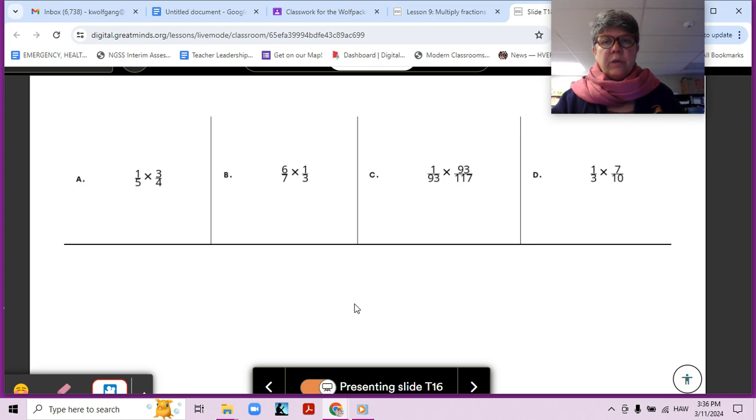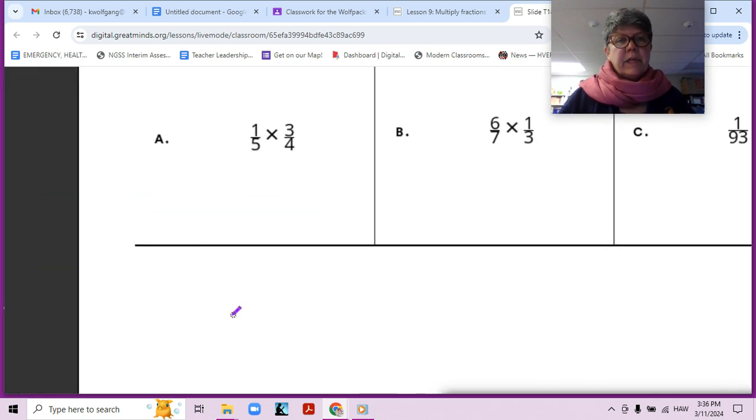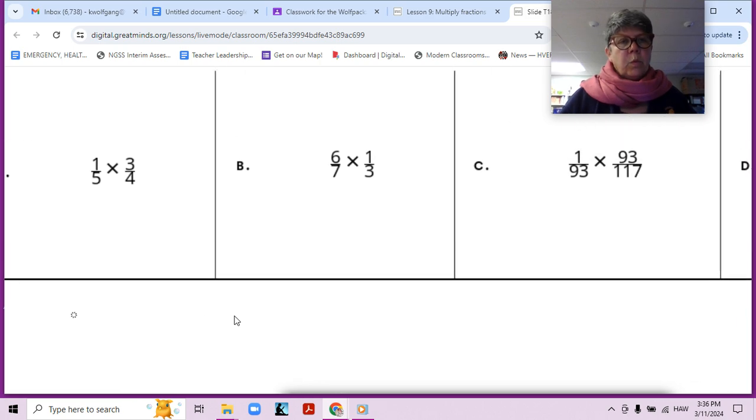Which one do you think you could do by known product, which is where you know the answer of a simpler problem, and then you multiply it by the number, like maybe this one, right? That one looks like a known product to me because I'm thinking about one fifth times one fourth times three.